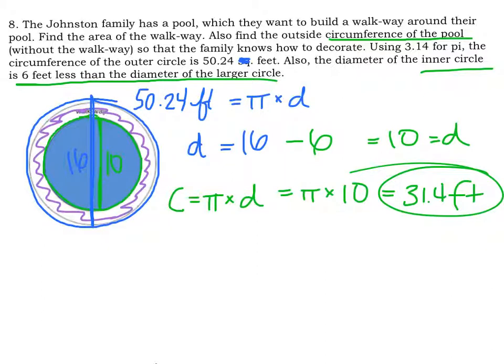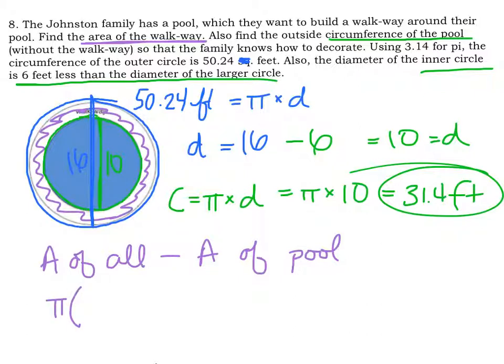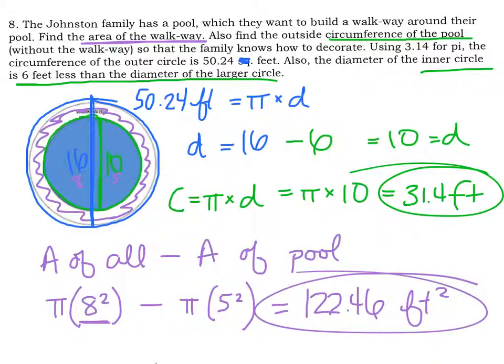But now we need to find the area of our walkway colored purple. In order to do so, we're going to subtract. We're going to find the area of everything, or all. We're going to subtract from that the area of the pool. That's going to leave us with just that walkway. So the area of everything, it's pi times radius. Well, diameter of 16, radius must be 8. Pi times 8 squared minus the area of the pool, which has a radius of 5. Pi times 5 squared. If you look at my answer key, that's incorrect. But this one is the accurate way to do it. And so when you solve this using radius, you end up with a grand total of 122.46 square feet. And that is the area of our walkway alone.